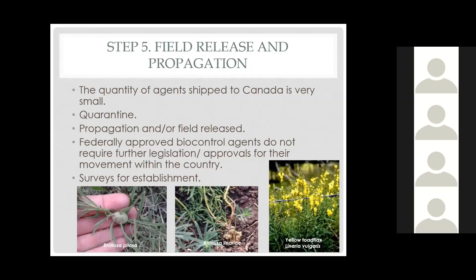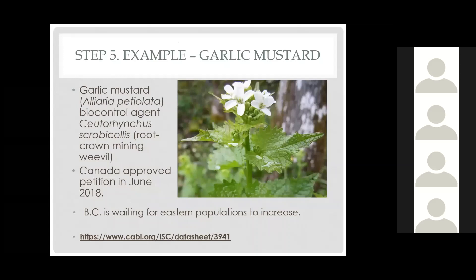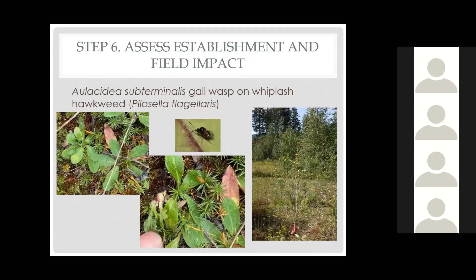Historically we've propagated many agents in tents, but at this time all are being released directly into the field. These early field releases are carefully chosen for security, long-term safety, and optimal habitat — which sometimes consists of a forested step, and then we have to guess. Thereafter, we survey the sites — often one or two only at the start — to determine if the agent has survived, which we call establishment. As an example, we contributed to a garlic mustard screening project. Ontario was the top funding province and received shipments in 2018, and we are currently waiting for those populations to build to a collectible level before we may receive some in BC.